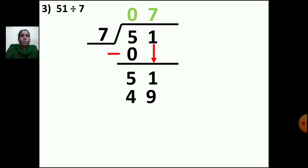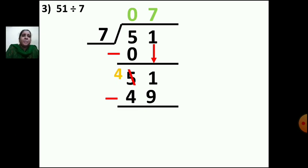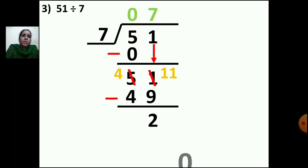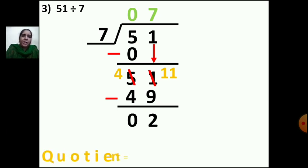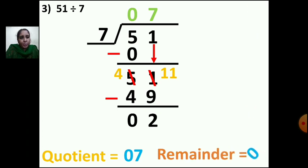Put the minus sign and draw one line. Now 1 minus 9 — you cannot do that, so you borrow from the next number. Cut 5, borrow 1 from 5, so 4 remains. Cut 1 in units place and write 11. Now subtract: 11 minus 9 is 2, and 4 minus 4 is 0. The quotient is 7 and the remainder is 2. That is your answer.